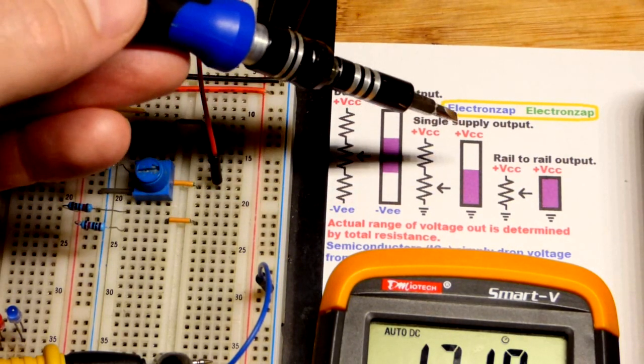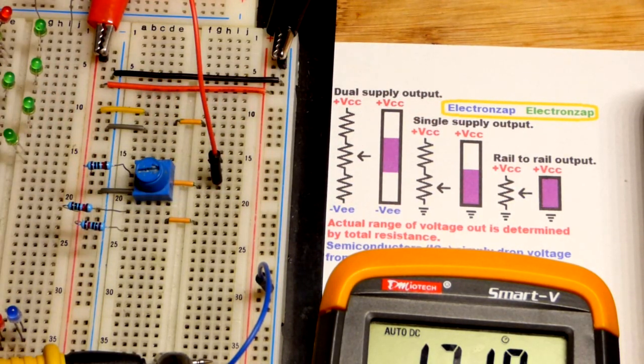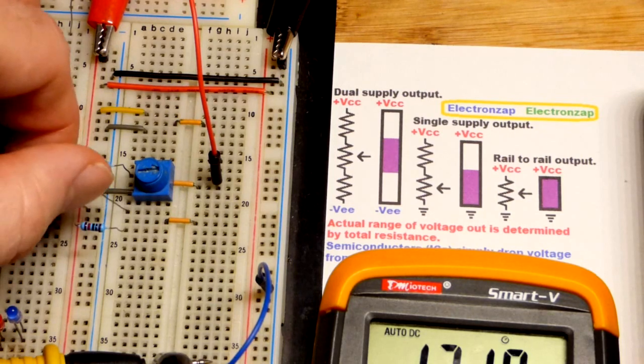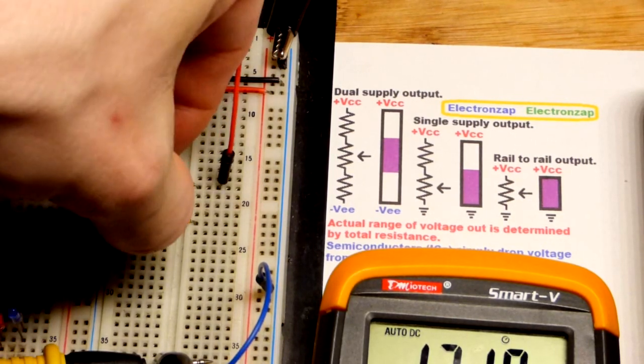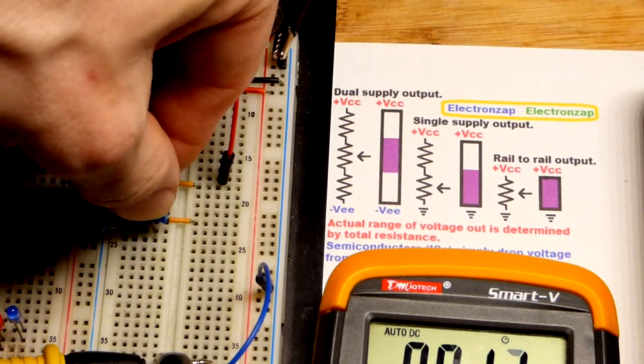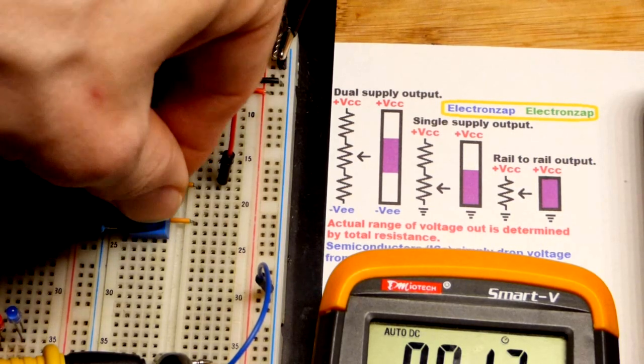I had a circuit where I needed to get all the way to the full positive supply, and I couldn't do that. So I had to make modifications. That was in the last video. So I'm going to move the trim pot down to our dual supply situation.